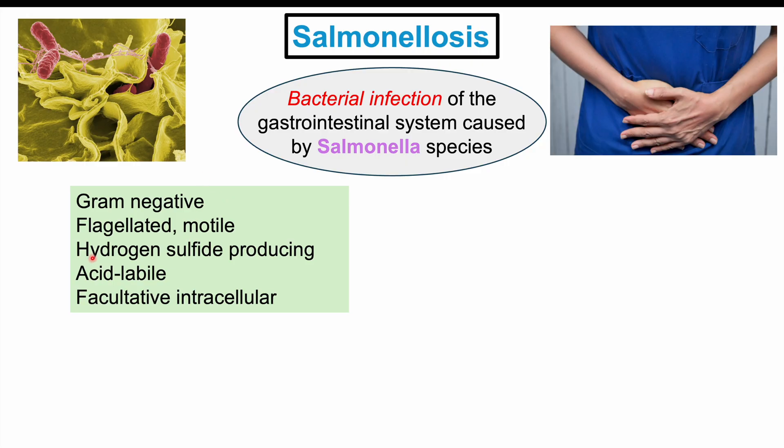Salmonella is also hydrogen sulfide producing, which is in contrast to bacteria like Shigella, which doesn't produce hydrogen sulfide. It's acid labile, which will be important when we talk about how we get infected, and it's facultatively intracellular, meaning it is possible for it to live inside of cells during certain situations.